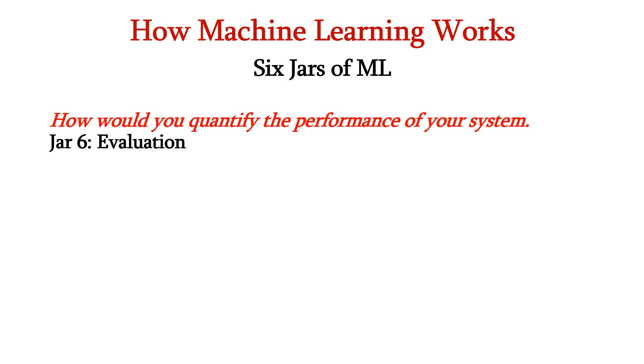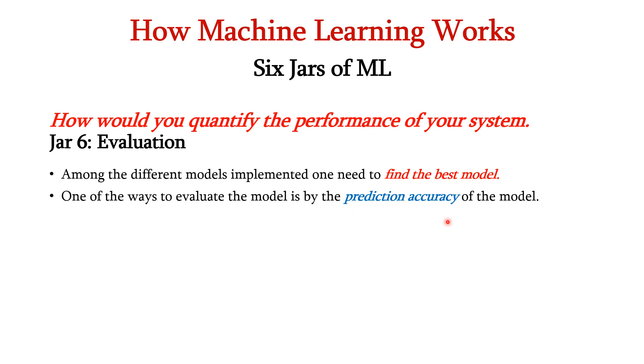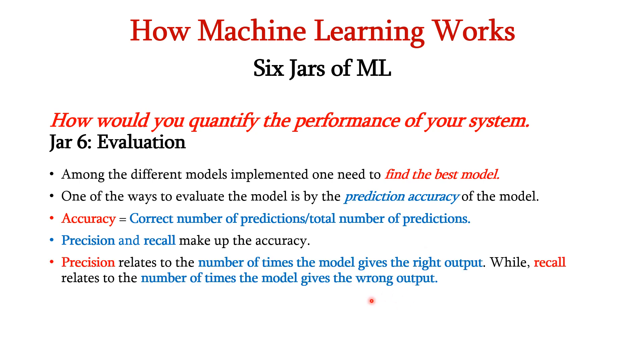Finally, we have to evaluate the system. That is we have to quantify the performance of our system. Here comes the role of jar 6. Among the different models implemented, we have to find the best model. One of the ways to evaluate the model is by prediction accuracy. Accuracy = correct number of predictions / total number of predictions. Precision and recall make up the accuracy. Precision relates to the number of times the model gives the right output while recall relates to the number of times the model gives the wrong output. The evaluation is always done on the test data instead of training data. Thus we have seen about 6 jars in machine learning.